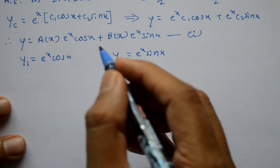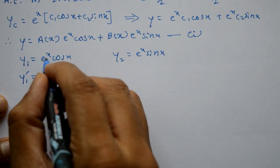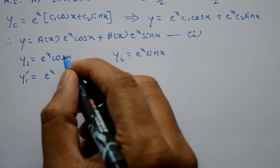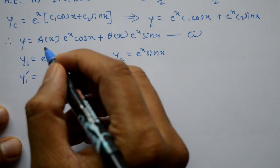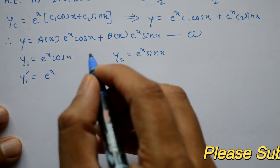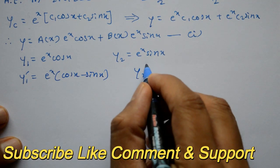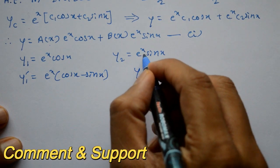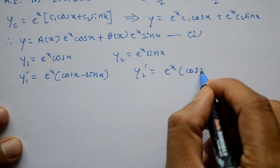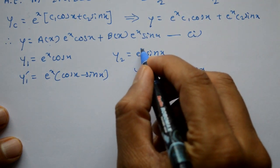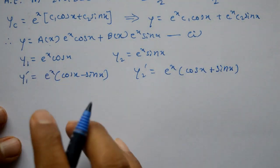We need to differentiate y1 and y2. Using the product rule, y1' equals e^x times (minus sin x) plus cos x times e^x, so y1' equals e^x(cos x minus sin x). Similarly, y2' using the product rule: e^x times cos x plus e^x times sin x, so y2' equals e^x(cos x plus sin x).